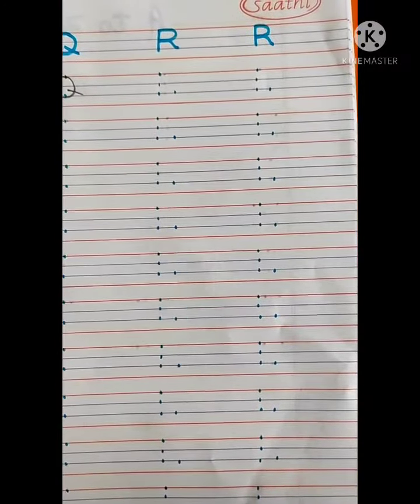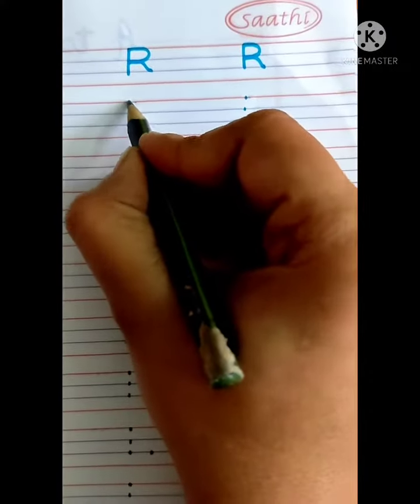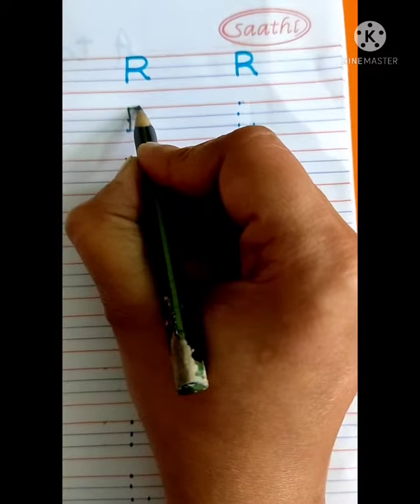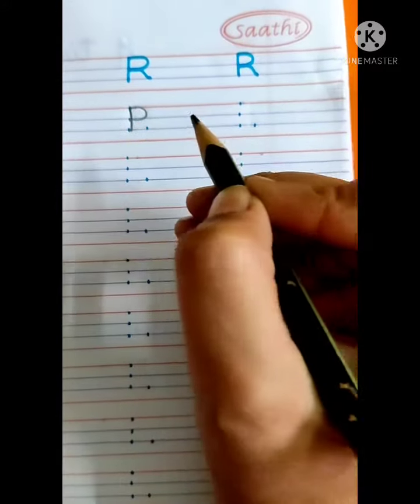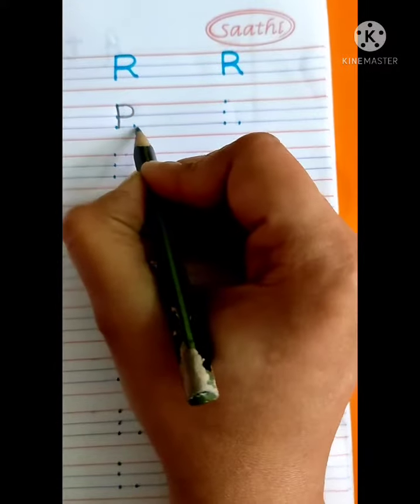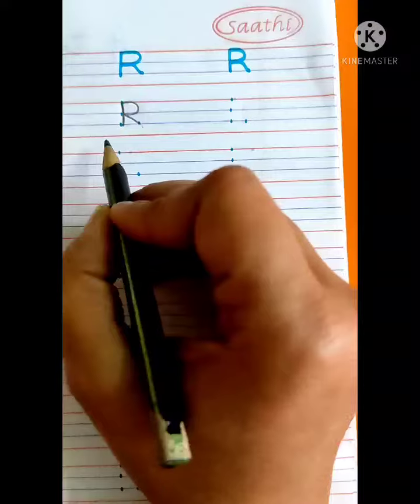Now we will write R. So make standing line from first dot to third dot. Like this. Then we will make curl from first dot to second dot. Then we will make slanting line from this dot to this dot. Like this. This is letter R.